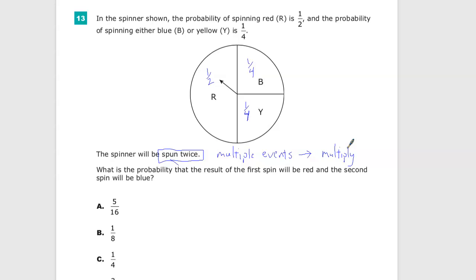Spinning, stop, spin. That's two things happening, not just one thing happening with lots of different variables involved. What is the probability that the result of the first spin will be red and the second spin will be blue?